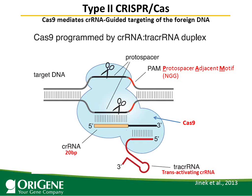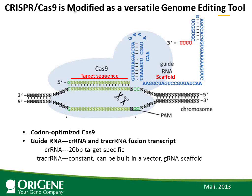The Type 2 CRISPR-Cas system has to be modified to be a genome editing tool. Instead of targeting foreign DNA, it is designed to target the cellular genome to cause a double-strand break. In this system, it needs two components. First is the codon-optimized Cas9 nuclease, and second is the guide RNA — a fusion of one RNA transcript combining crRNA and tracrRNA.